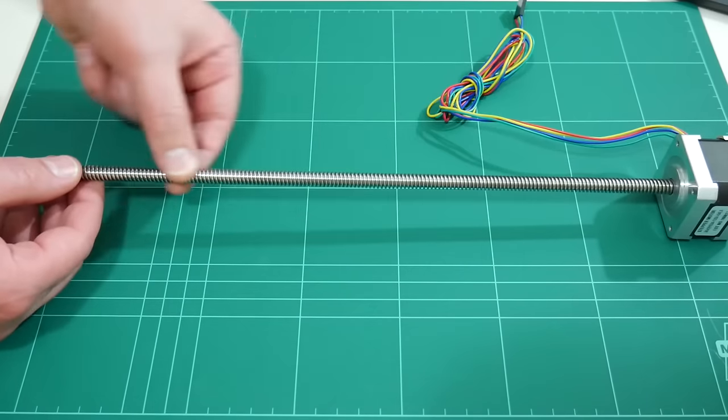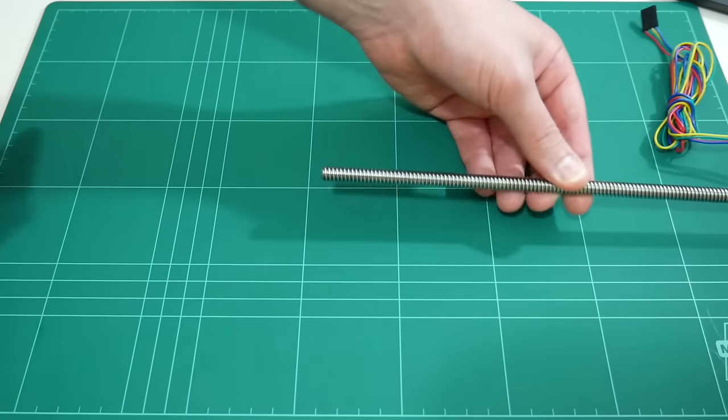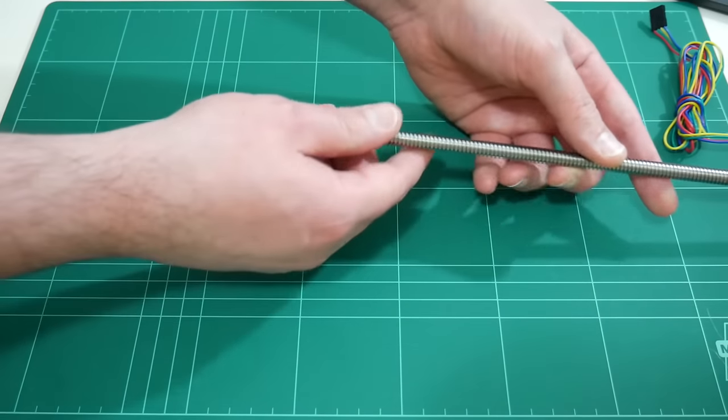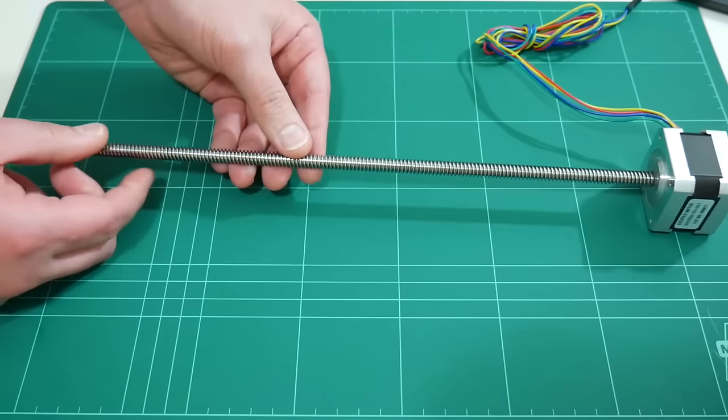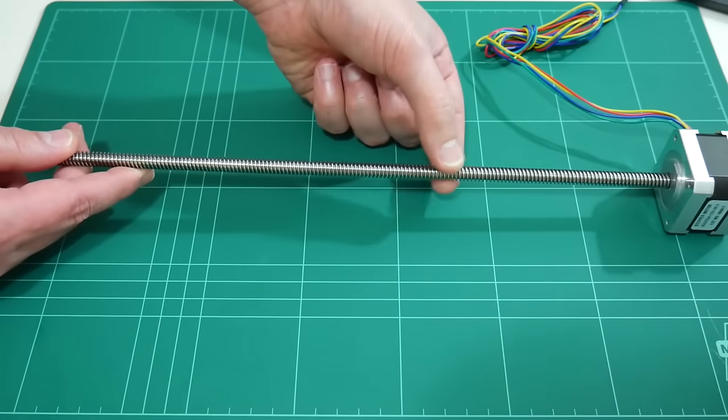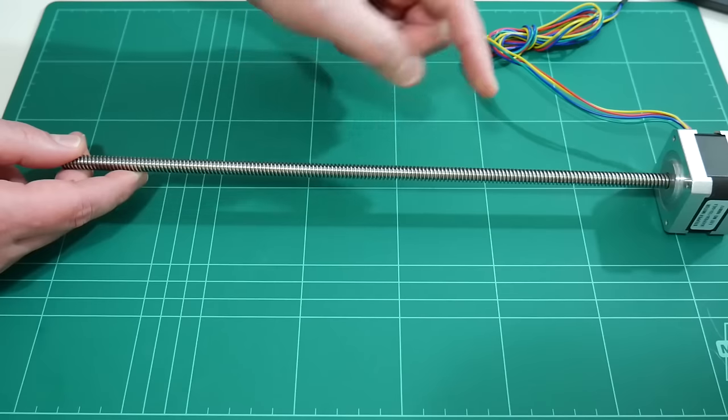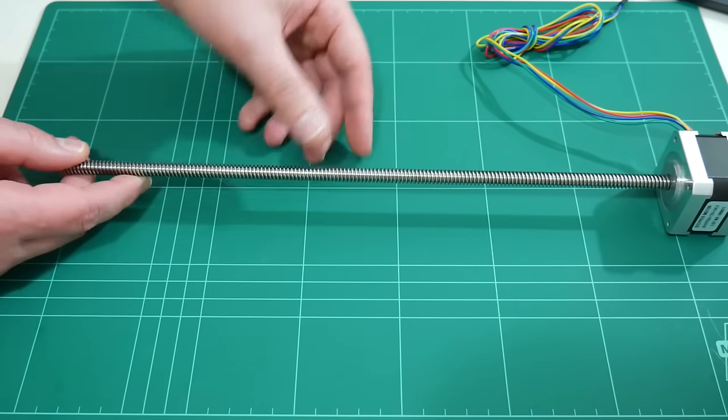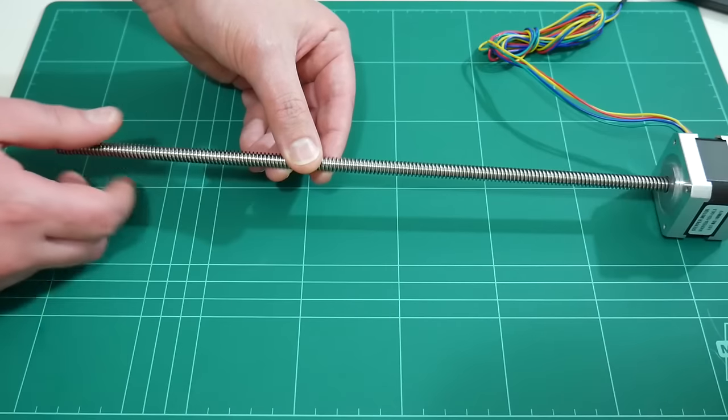But maybe you have your own lead screw which is longer than the one inside the motor. Then you could replace the lead screw with a longer lead screw. Or maybe you have a different pitch or a different number of starts on your lead screw. That would be another great reason to replace it in this motor.